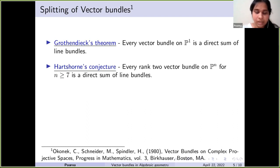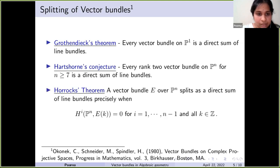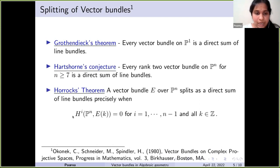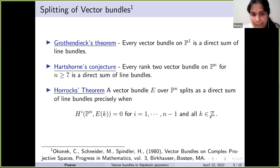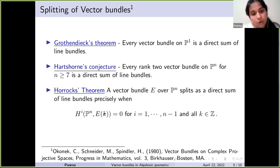Coming back to the question: when does a vector bundle on projective space split as a direct sum of line bundles? This was proved by Horrocks. He proved that a vector bundle E on Pⁿ splits as a direct sum of line bundles precisely when the following vanishing condition holds: Hⁱ(E(k)) = 0 for i ranging from 1 to n−1 and for all k. That is, all intermediate cohomology groups vanish for all twists. This is a necessary and sufficient condition for a vector bundle on projective space to split into a direct sum of line bundles.